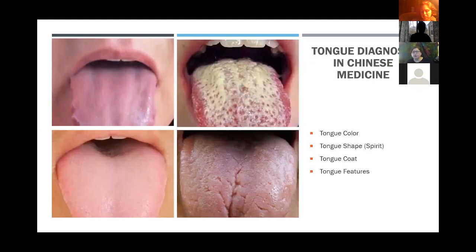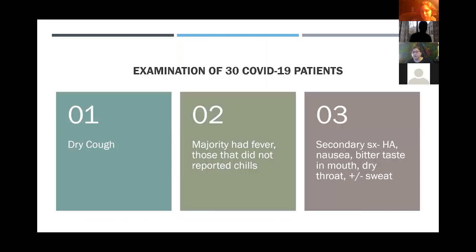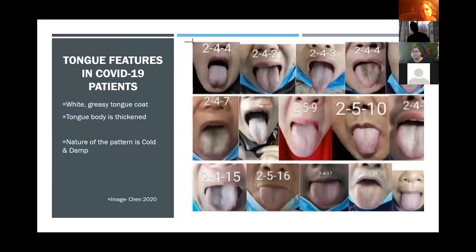If we go back to the bottom left, that's our normal tongue feature. This is not all of the 30, but these are the tongues of those initial 30. We see two main features. Most of them have what we would term as a thick white tongue coat — that's what we term as greasy. It's kind of moist. On the second row, in the far left and the far right, those are good examples of that, where the tongue coat itself is thicker than we want to see it and it's white in nature. The tongue body itself is almost swollen, and we see this kind of center crack down the middle of most of these tongues.